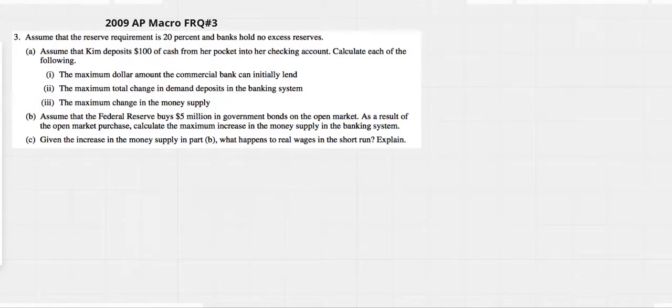AP Macro FRQ number three. Let's see if we can do it. T-accounts, right? T-accounts. Tricky, tricky always.